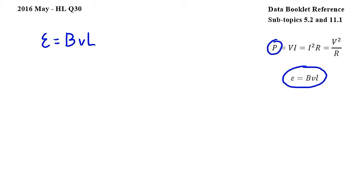Next, we will use this equation from subtopic 5.2, where P is power, V is potential difference, or EMF, and R is resistance.